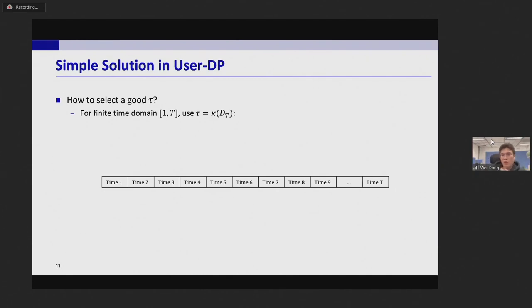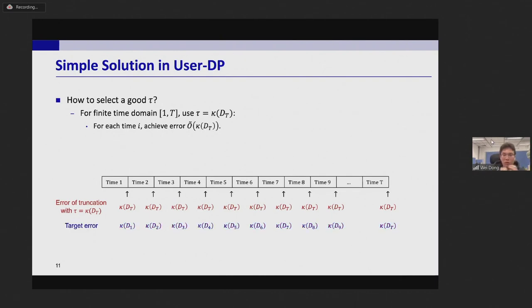For finite time domain case we can use tau equal to kappa DT which is the maximum user contribution for the whole stream. However this idea achieved the error to the big O kappa DT for all time i. But our target is to achieve error kappa Di for each time i, and these two values have a large gap especially at the beginning time. Like kappa DT can be as large as T but kappa D1 is only one. Besides it requires strong prior knowledge to know kappa DT which is also unachievable for infinite time domain.